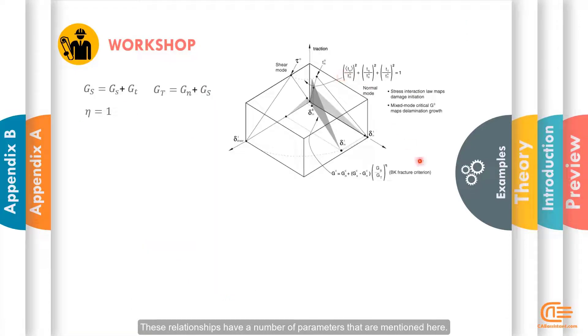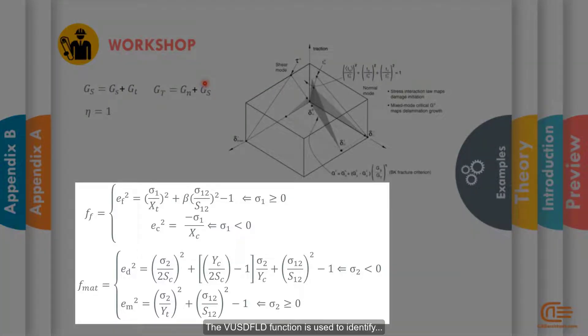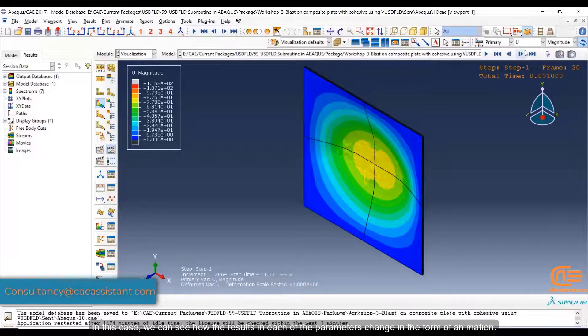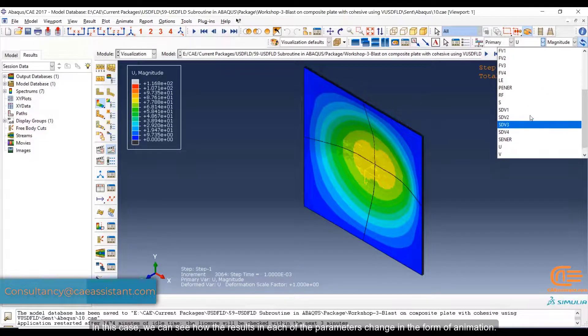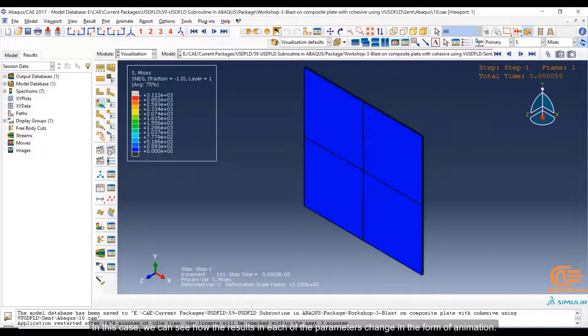We will utilize the VUSDFLD subroutine to model damage in composite structure under explosion in this session. These relationships have a number of parameters that are mentioned here. The VUSDFLD function is used to identify damage in the matrix and composite fibers. In this case, we can see how the results in each of the parameters change in the form of animation.